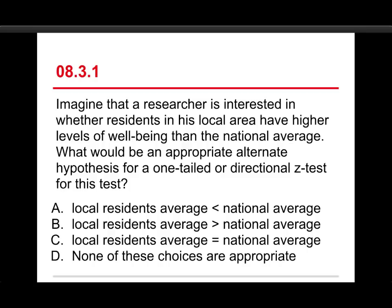What would be an appropriate alternate or alternative hypothesis for a one-tailed or directional z-test for this test? The choices are that the local residents average is less than, greater than, or equal to the national average, or that none of these choices are appropriate. Remember, we're asking about the alternate or alternative hypothesis.